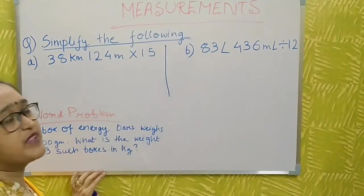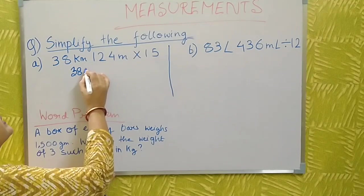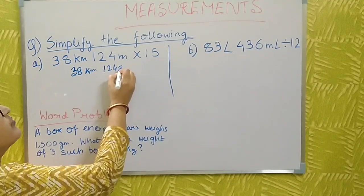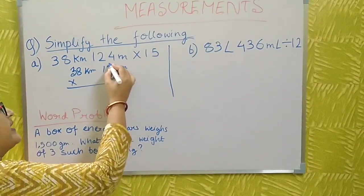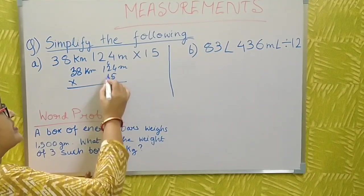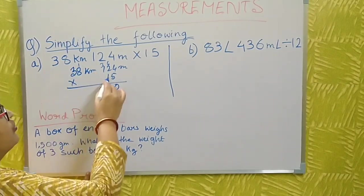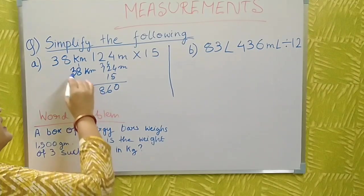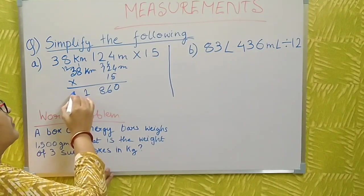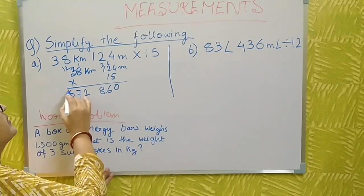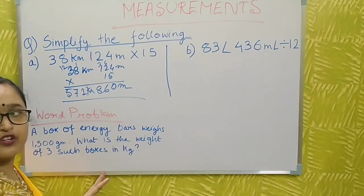Now I will discuss multiplication of measurements. There is no confusion — for example, 38 kilometers 124 meters multiplied by 15. Work through: 15 × 4 = 60, carry 6; 15 × 2 = 30 + 6 = 36, carry 3; 15 × 1 = 15 + 3 = 18, carry 1; 15 × 8 = 120 + 1 = 121, carry 12; 15 × 3 = 45 + 12 = 57 kilometers.